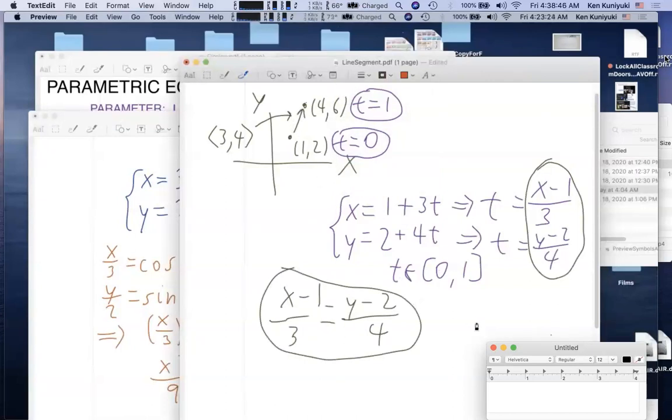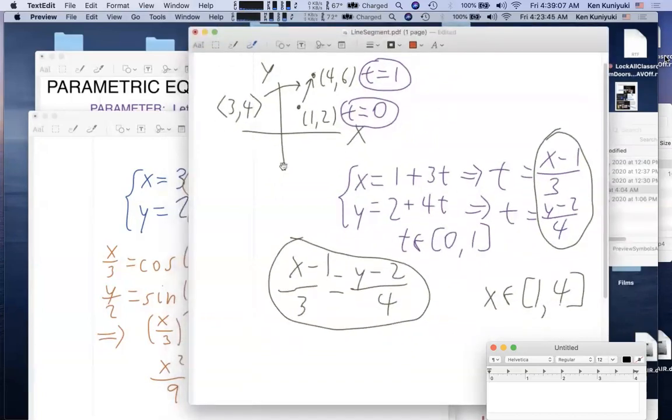We do need to restrict it, though. So, x, for example, is restricted from x equals 1 to x equals 4. We don't get the entire line. We're only getting a piece of the line. And again, this equation loses orientation, but we know the orientation for this parameterization. You'll see this stuff later on.